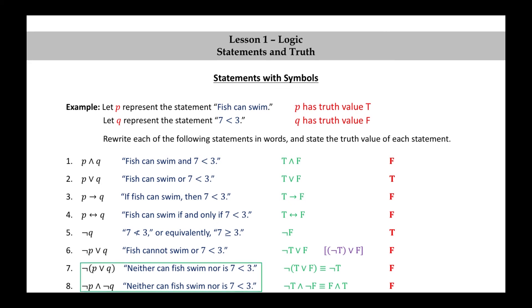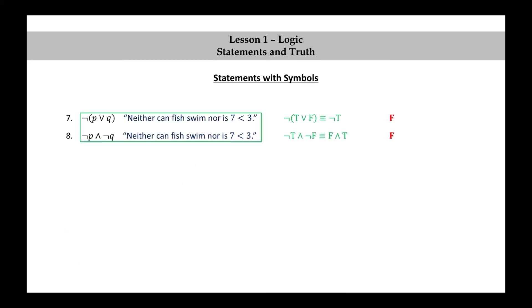It's worth exploring numbers seven and eight for just one more moment. Notice that they both have the same English translation. So it seems like the negation of P or Q should be logically equivalent to not P and not Q, and in fact later we'll be able to show this mathematically. This is known as one of DeMorgan's laws. There's one other DeMorgan's law — see if you could write down what you think the other DeMorgan's law might be.